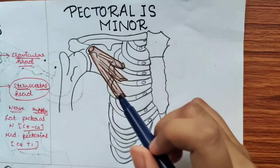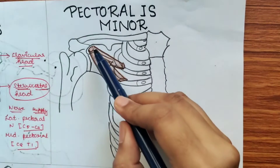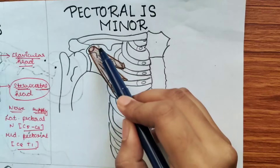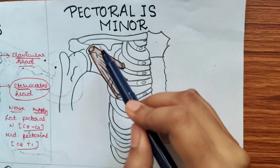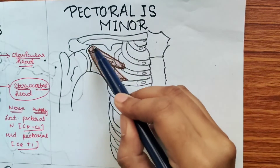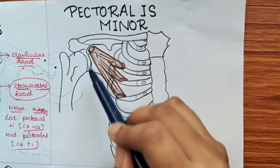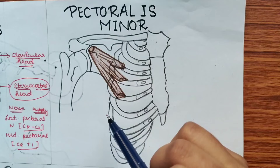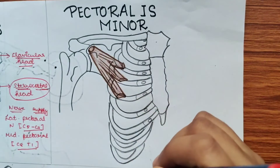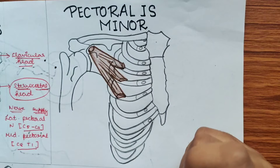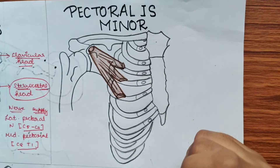Insertion — this muscle is inserted by a short and thick tendon into the coracoid process of the scapula. As you can see, this is the scapula, this is the coracoid process of the scapula, and it gets inserted into the coracoid process. To be more specific, it is inserted into the upper and medial aspect of the coracoid process.